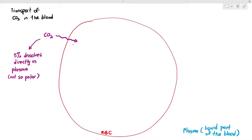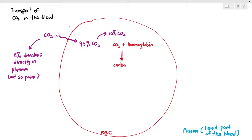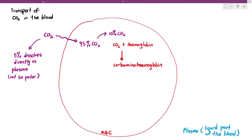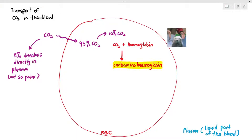About 95% of the CO2 will then diffuse into the red blood cell. Of that, 10% of the carbon dioxide will bind to the hemoglobin to form something called carbaminohemoglobin. Some students are surprised that it's only 10% that binds to hemoglobin — in fact, very little carbon dioxide directly binds to hemoglobin to form carbaminohemoglobin.